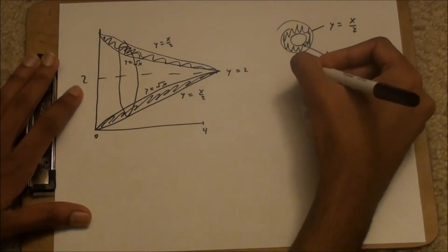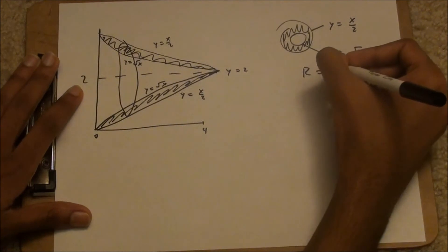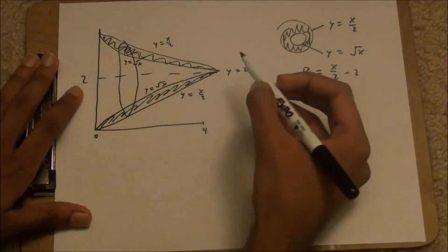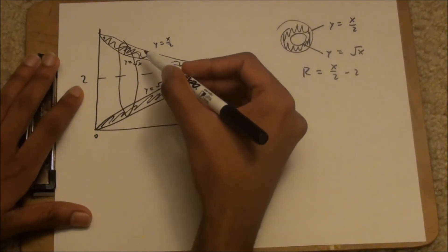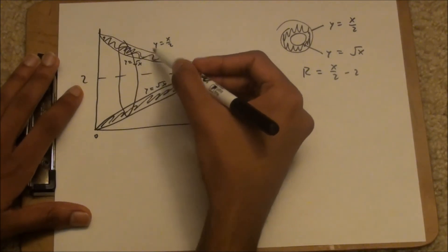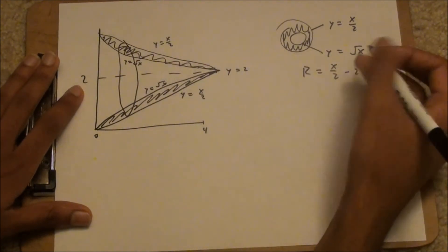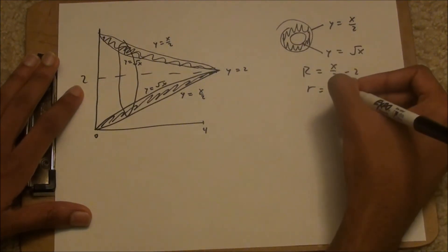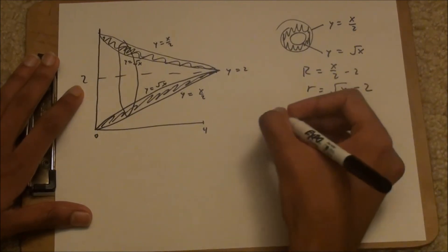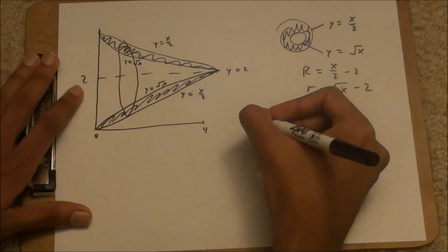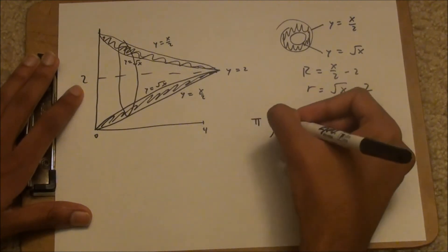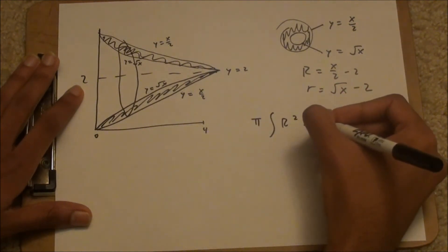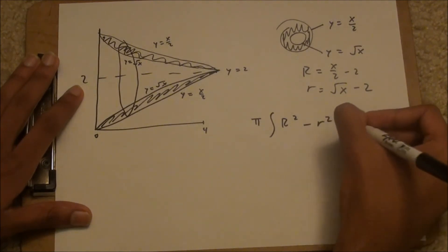So that means our larger radius is x over 2 minus 2, since, again, the distance between two lines is their difference. 2 is the axis of rotation, and little r, the inner radius, is square root of x minus 2. And our washer function is pi integral capital R squared minus little r squared dx.